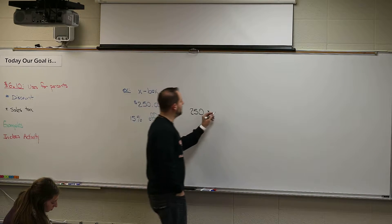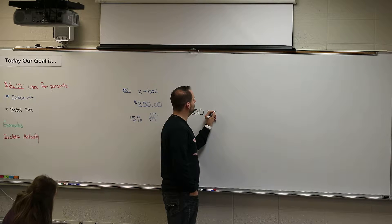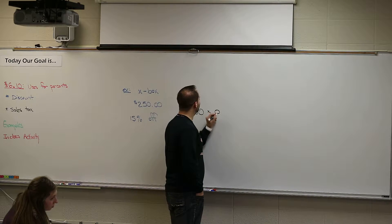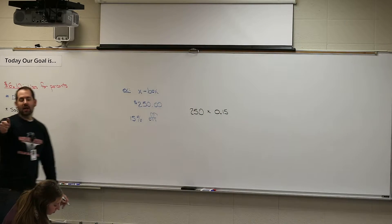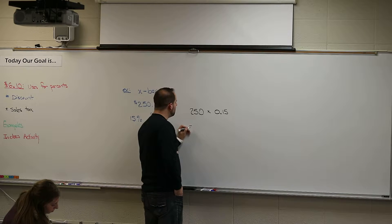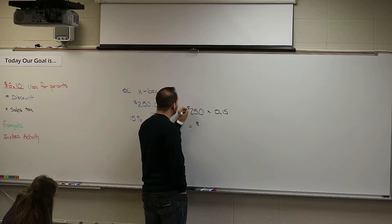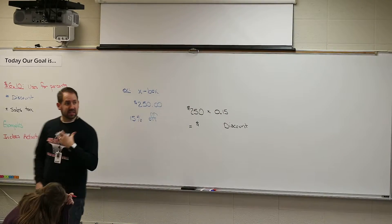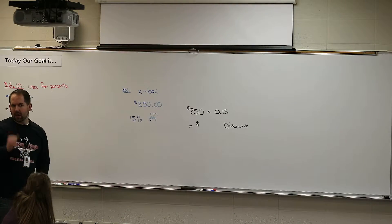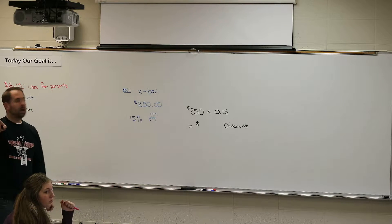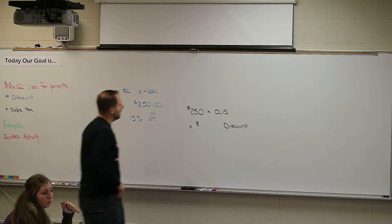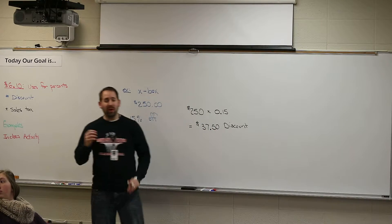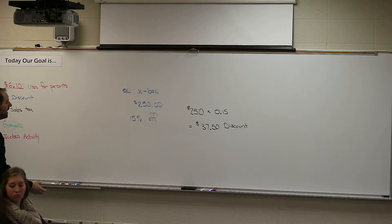So when we do that, $250 times - now how do we write a percent as a decimal? Two spots. So what is 15% as a decimal? 0.15. Right, so we're going to take 0.15 times 250. This number will be the actual discount that we're going to get on this purchase. It will not be the final price - it's the discount we're going to receive. So, 250 times 0.15 please.